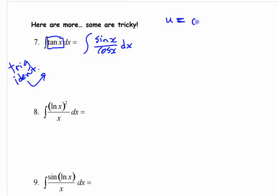U has to be cos x because then the derivative of that is negative sine x, right? So there's going to be a negative appear there.